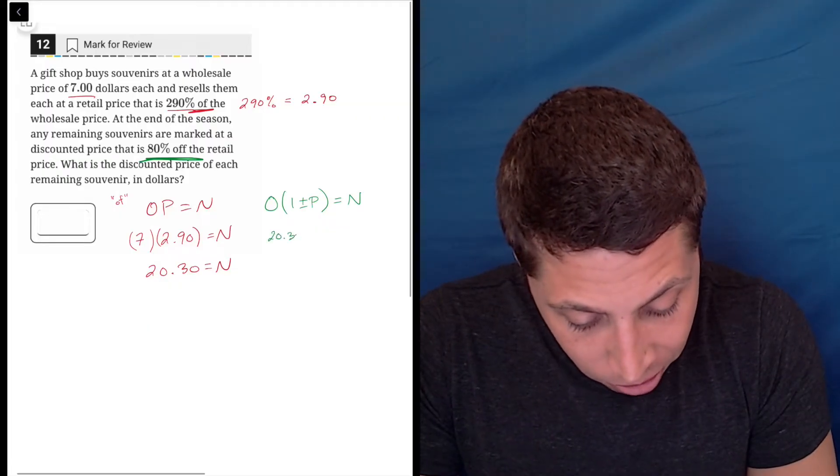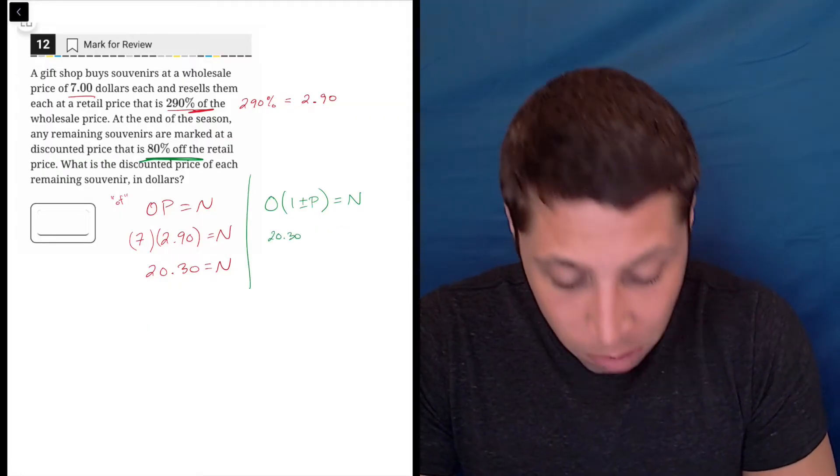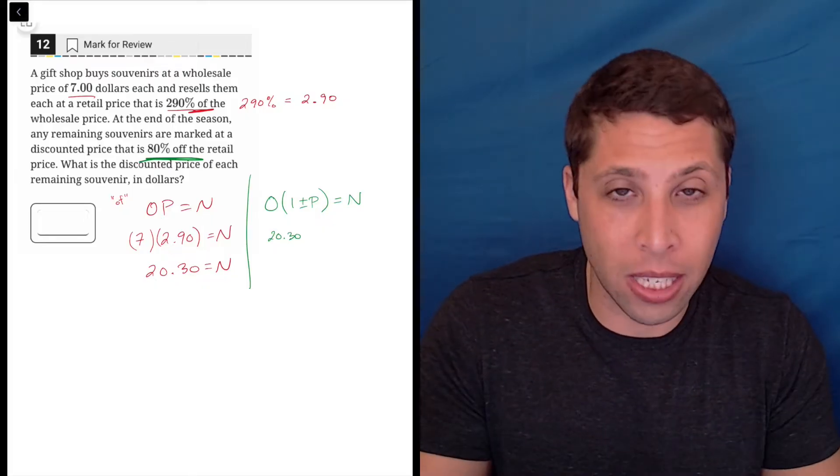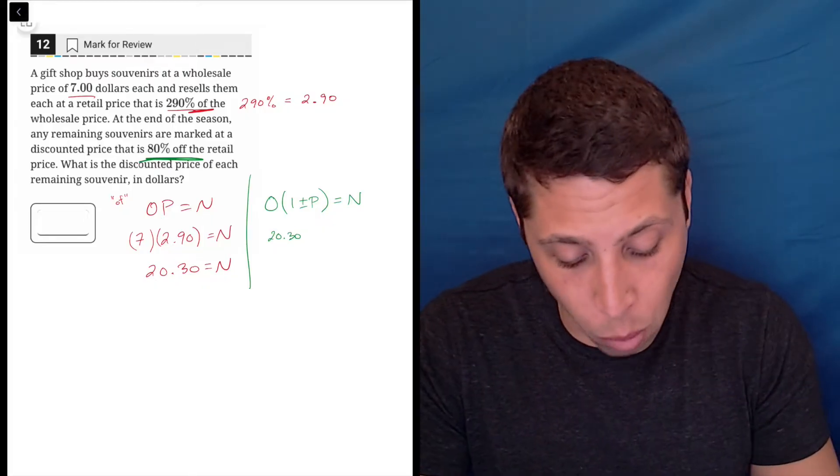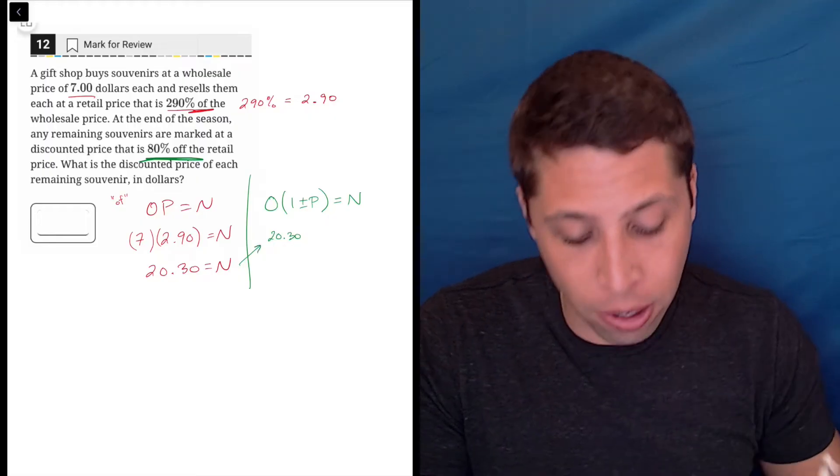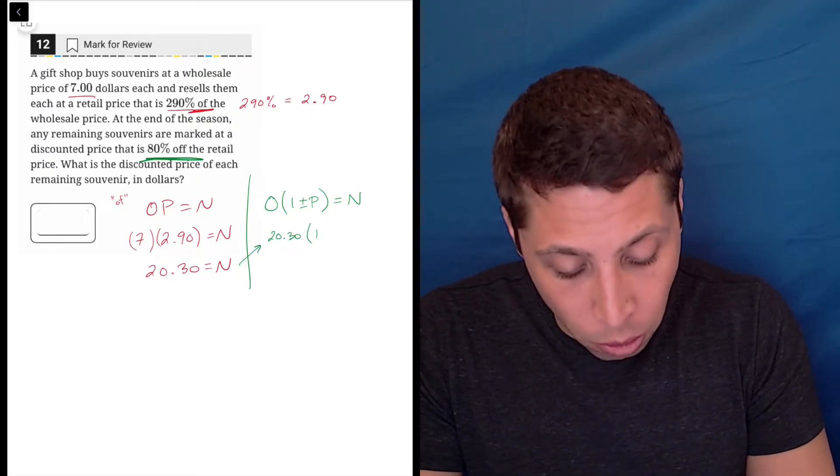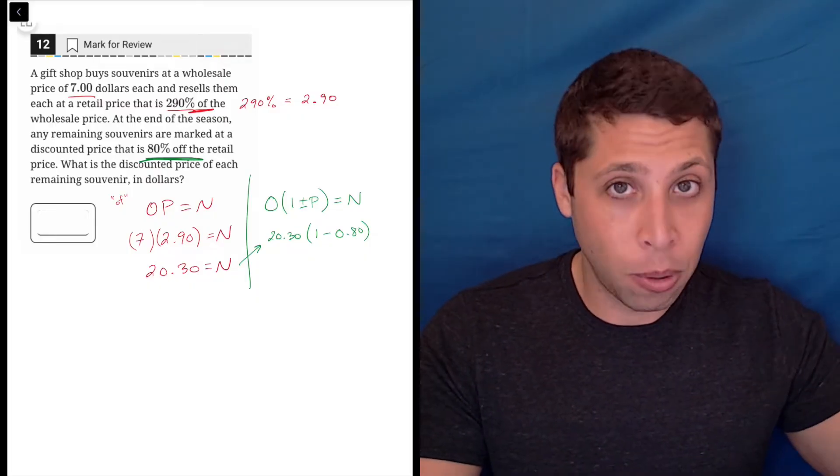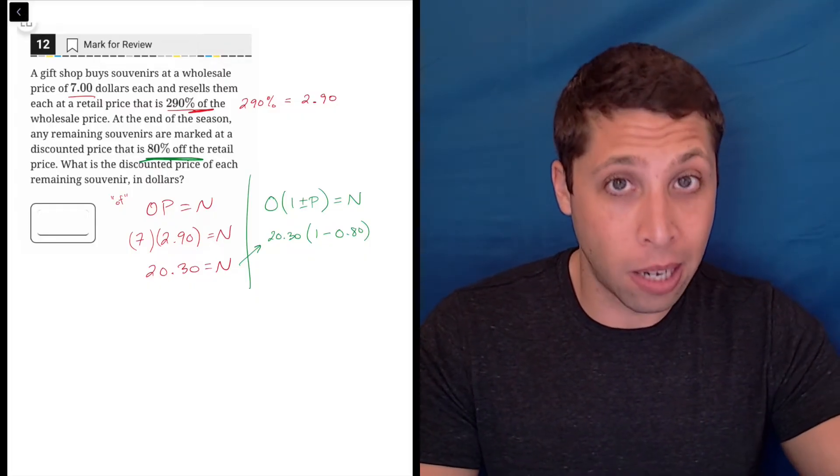So when now we're going to use this other open formula, the new price, the new original is twenty dollars and thirty cents. That changes because it's a new kind of situation. It's not the seven anymore because now we have a new value. So the twenty dollars and thirty cents is now the original, and from that we're going to take off 80%. So again, I write that as a decimal in the P portion of the formula.